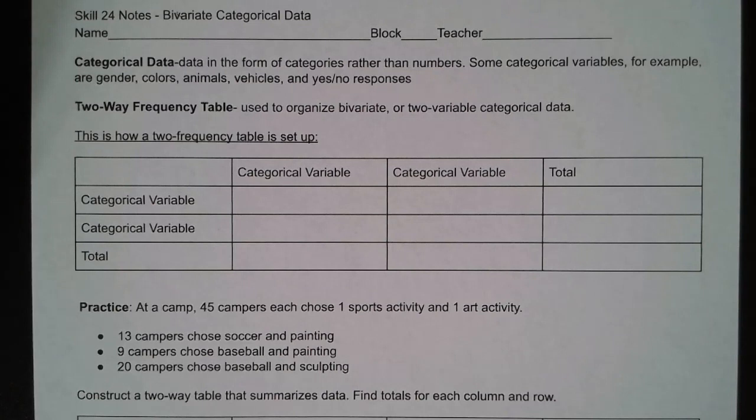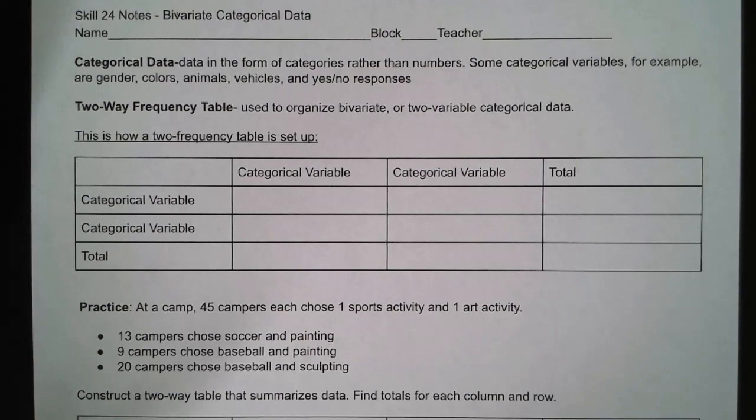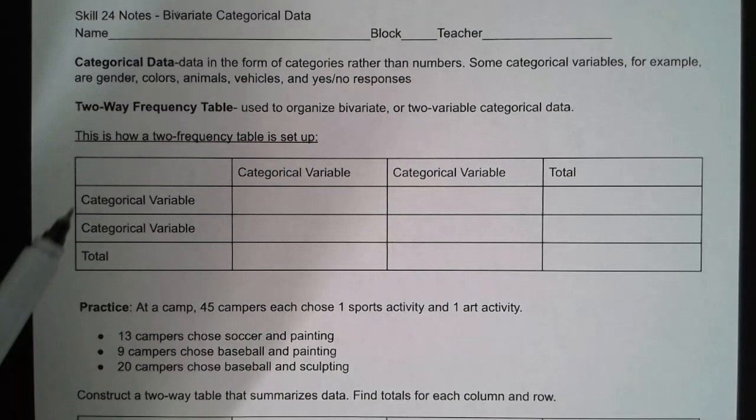Categorical data is data in the form of categories rather than numbers. Some categorical variables, for example, are gender, color, animals, vehicles, and yes or no responses.